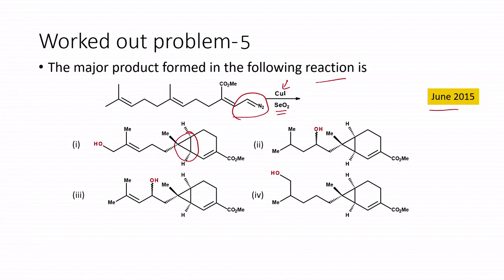Following the carbene insertion reaction, we are now going to see a different type of reaction: the cyclopropanation reaction. If you look at all four different products given, they all have a cyclopropyl unit. A cyclopropyl unit is formed when a diazo compound is treated with a metal catalyst — especially copper or rhodium transition metals — to produce the carbene. That carbene will insert itself onto an alkene double bond, and we end up with a cyclopropyl derivative.